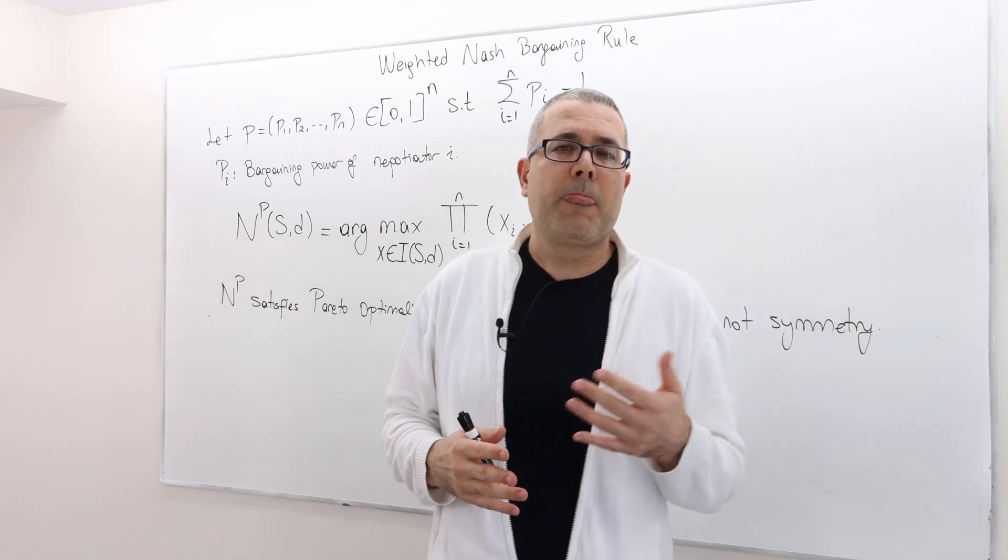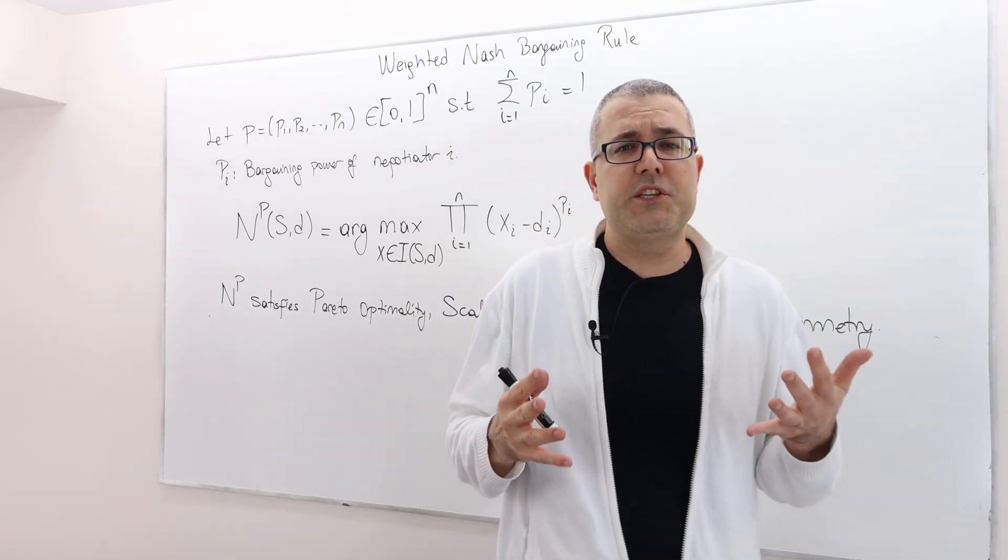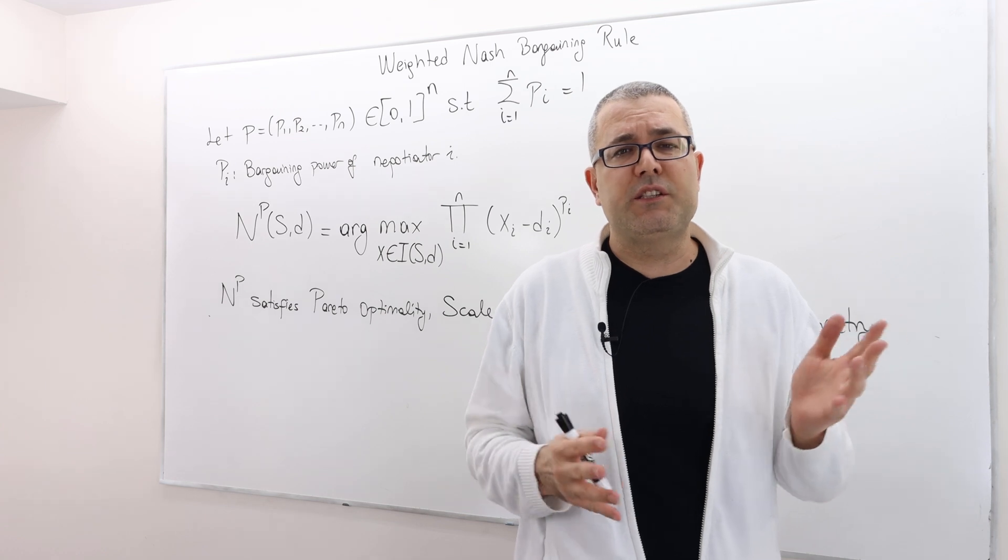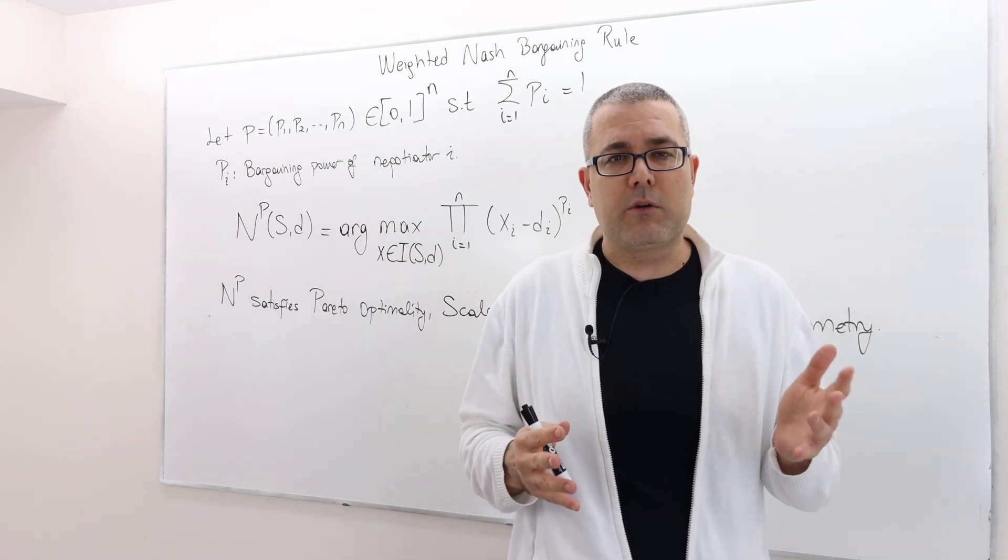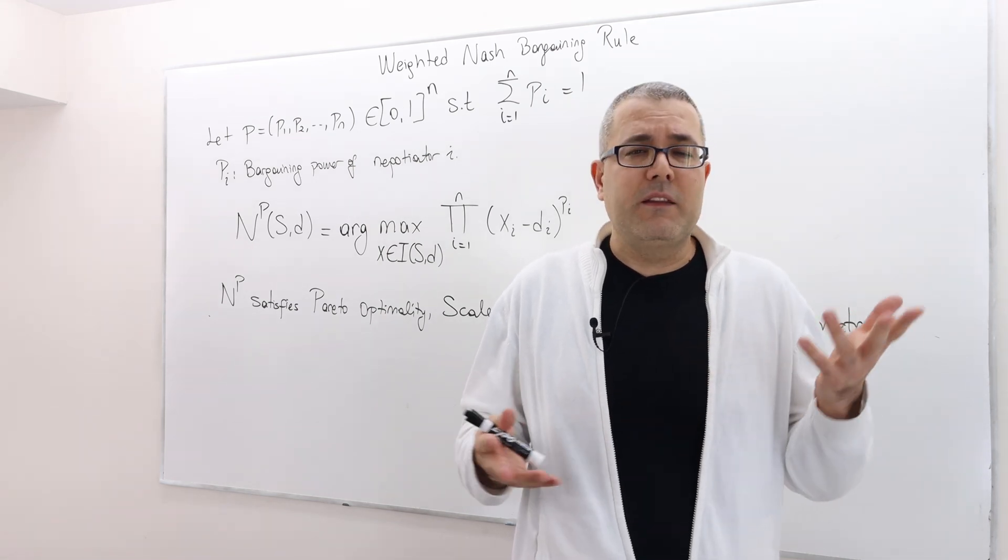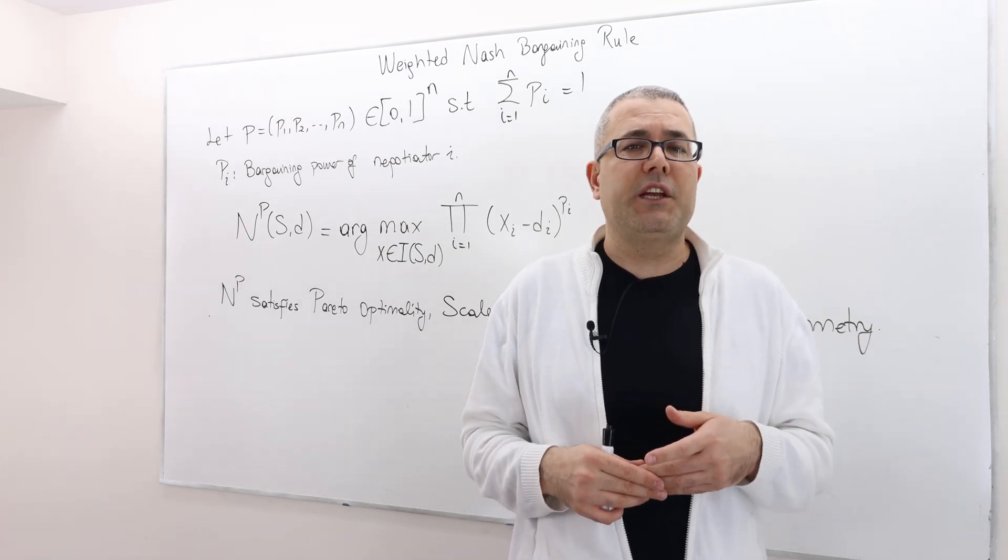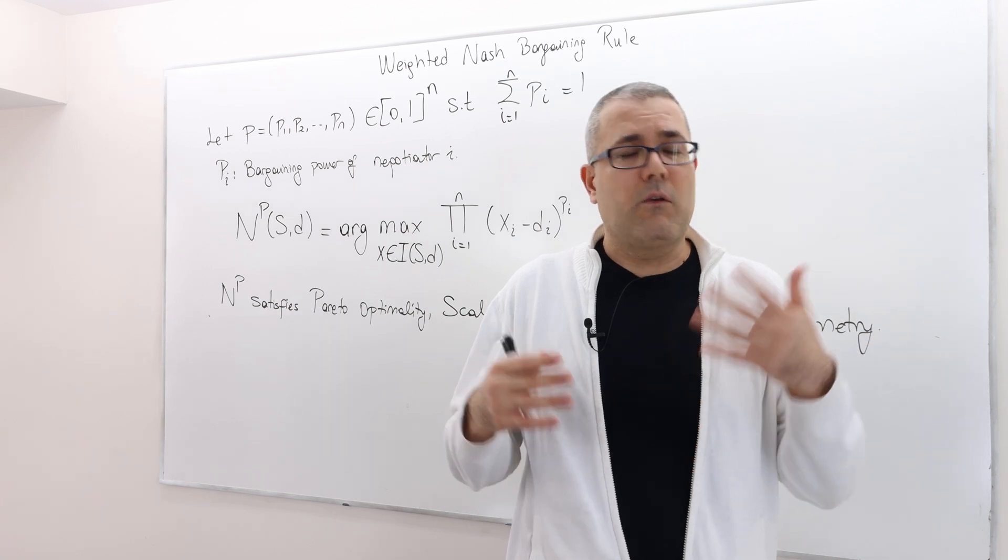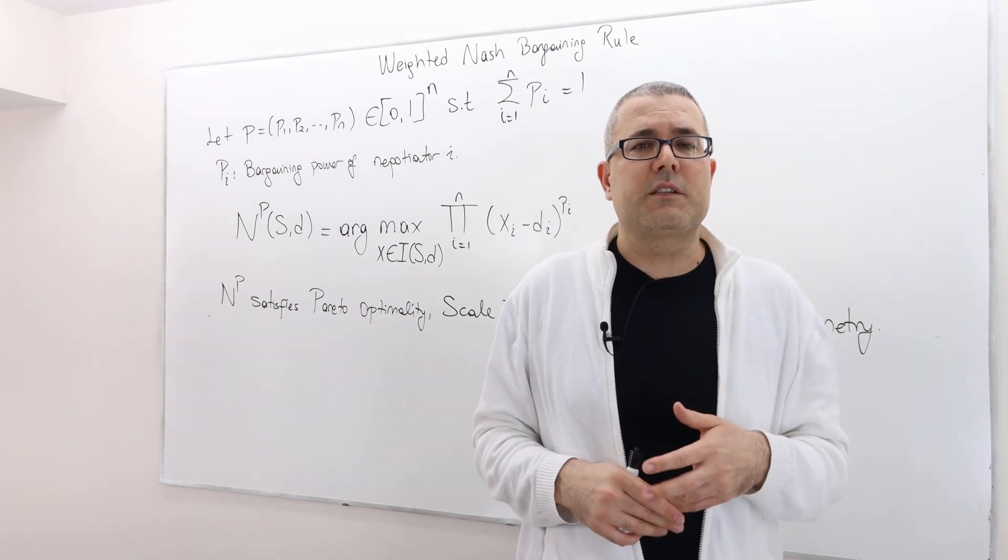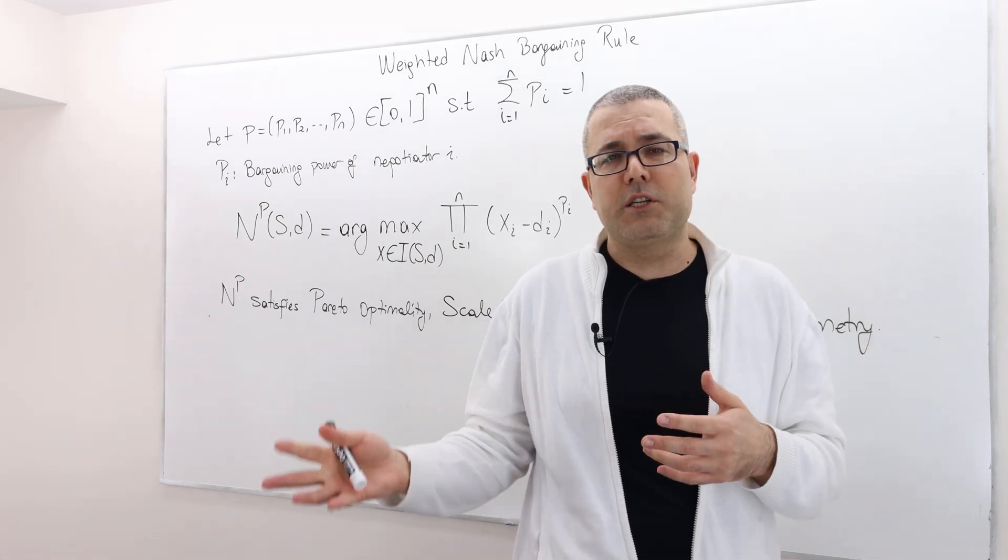Well, let's suppose you are modeling a strategic environment where you know that negotiators do not have equal bargaining power, right? I mean, this is usually the case. For example, if it is a wage negotiation and on the one side there is a male or a man and on the other side of the negotiation table, there's a woman.